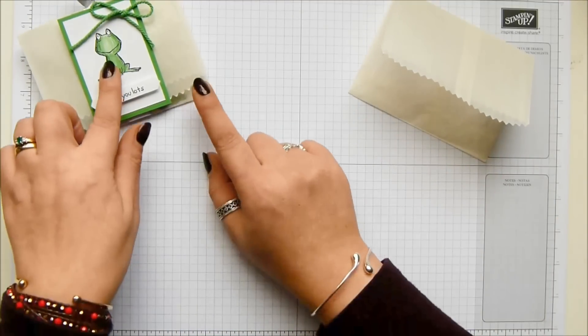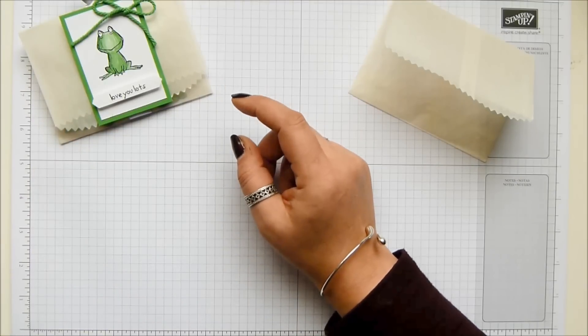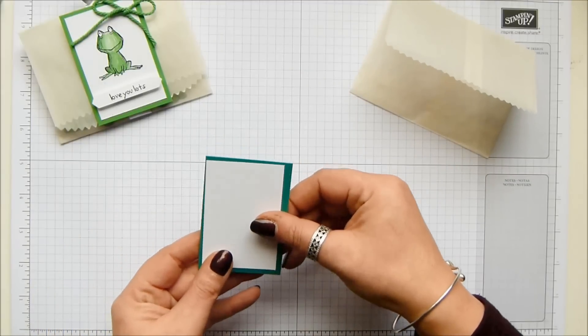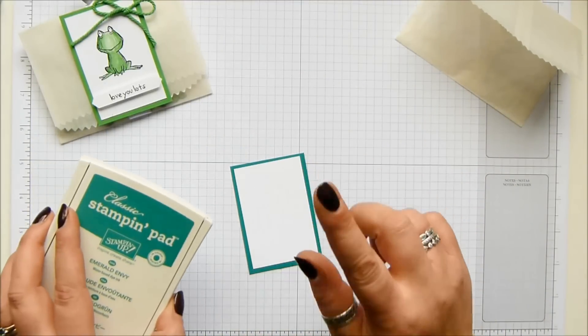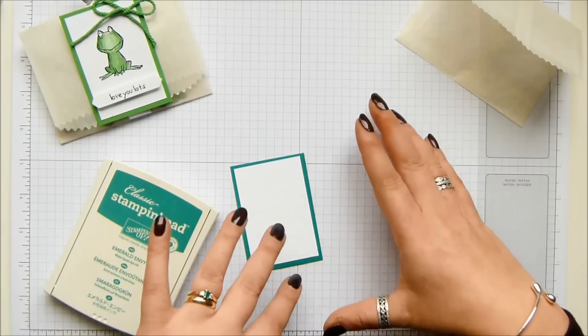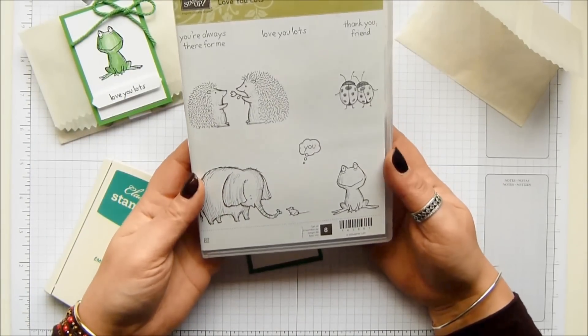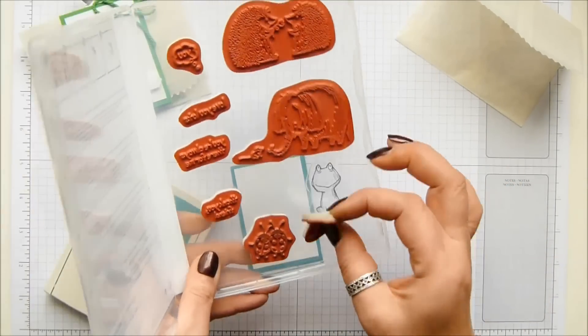Now this was done with Cucumber Crush, and obviously Cucumber Crush is retiring soon. It's leaving us, or it certainly is at the point in time I'm filming. I've decided to go with Emerald Envy now. This is one of the colors that is staying with us, and I've got the Love You Lots stamp set. Look at that frog, he's so cute, I love him.